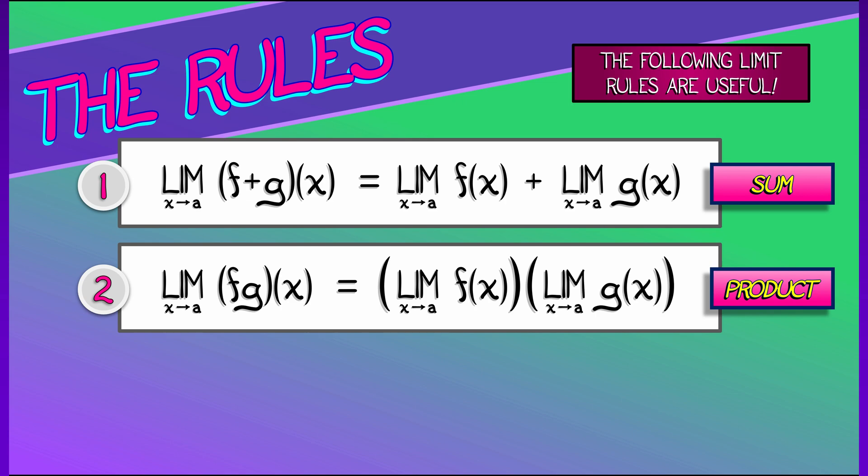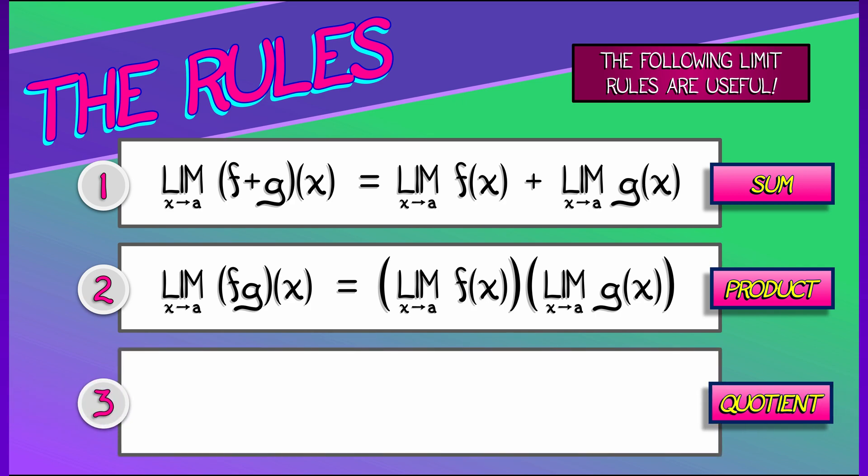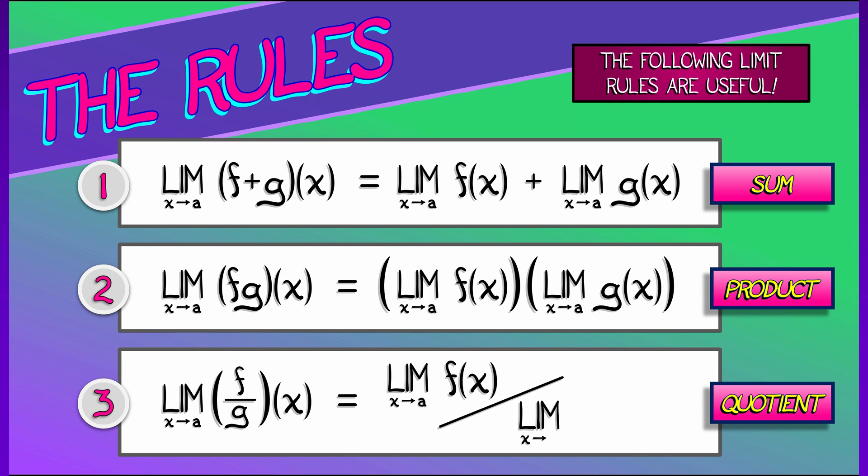We got a summation rule, product rule, and we've got a quotient rule that follows the same pattern. If I have the limit as x goes to a of f divided by g, then that's the limit of f divided by the limit of g, obviously. But got to be a little bit careful here. You want to make sure that denominator does not evaluate to zero. Otherwise, you have problems.